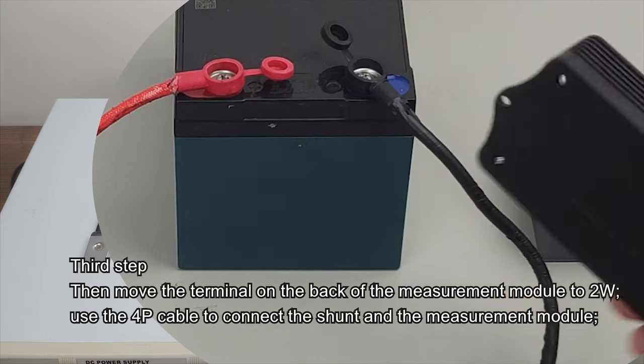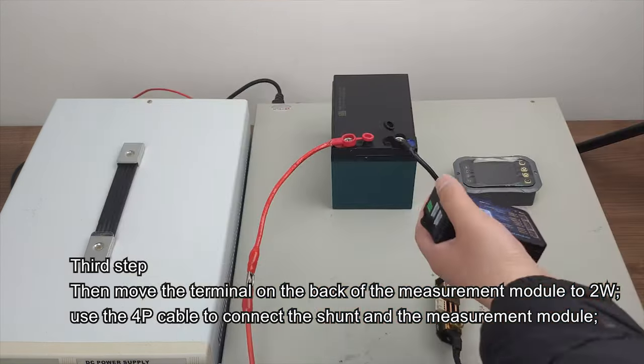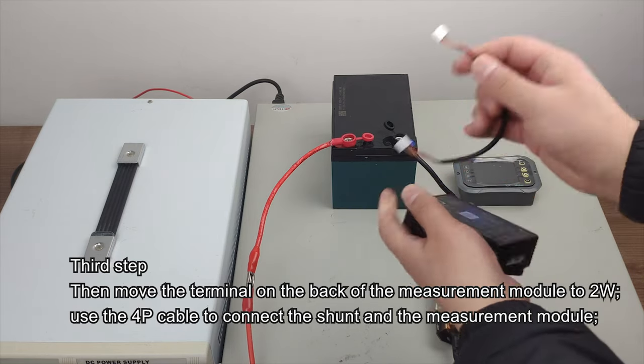Third step: Then move the terminal on the back of the measurement module to 2W. Use the 4P cable to connect the shunt and the measurement module.